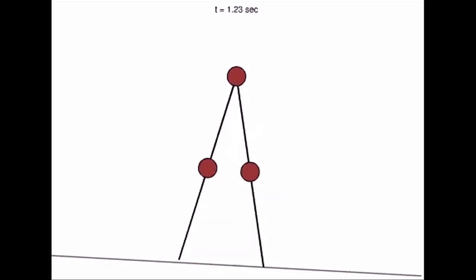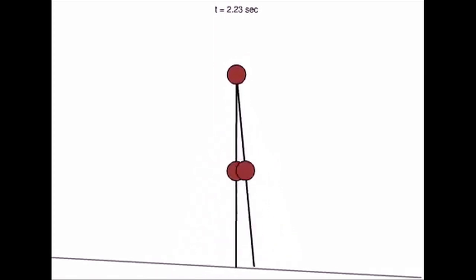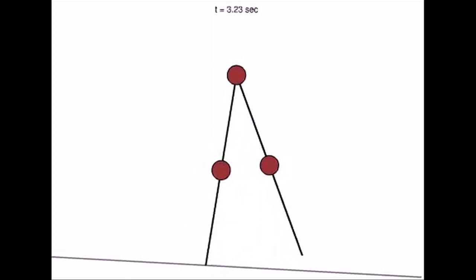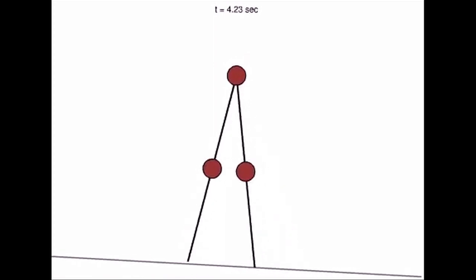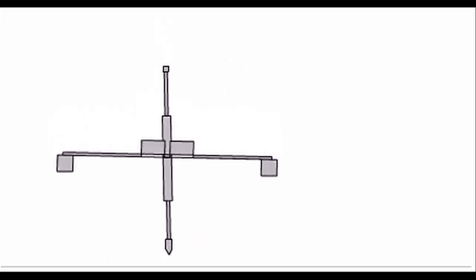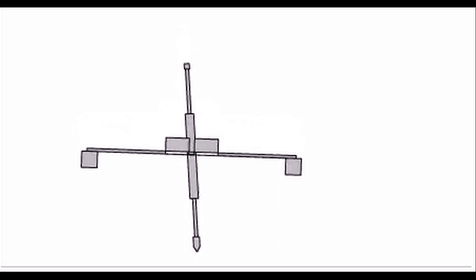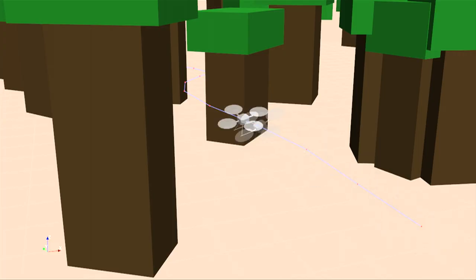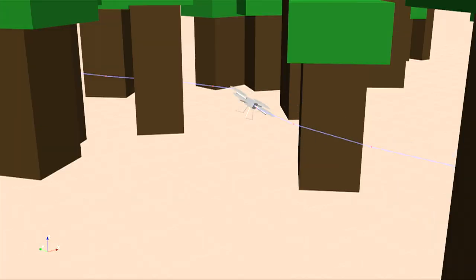We're going to see examples from very simple mathematical models of robots, from walking robots, hopping robots, basic manipulation, and basic flying robots.